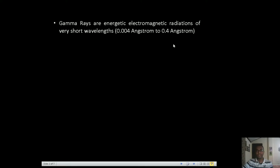Mostly naturally occurring gamma rays or gamma radiations are from radioactive sources. These radioactive sources means the nuclei which emit radioactive particles and radiations. After a nucleus undergoes alpha or beta decay, it may remain in an excited state or energetic state, and this excess energy is emitted in the form of gamma rays.